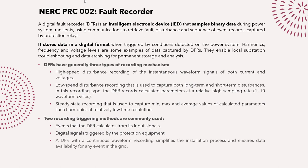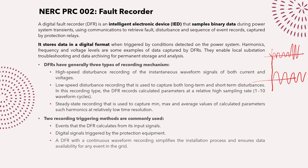Fault recorders have three types of recording mechanisms. The first is high-speed disturbance recording of instantaneous waveform signals of both current and voltage. For example, the voltage waveform is captured continuously; when a fault occurs, the fault current increases and the voltage suddenly drops significantly. After fault clearance, the voltage changes depending on the fault type. This mechanism records the instantaneous waveform signals of both current and voltage.